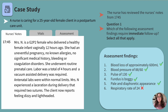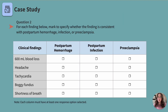Let's move on to question two. This is a chart similar to one you may find on your exam. For each finding listed, you will mark whether the finding is consistent with postpartum hemorrhage, infection, or preeclampsia. Pause, make your selections, then we'll review. Let's go through these one by one. First, 600 mLs of blood loss — that's consistent with postpartum hemorrhage. Headache — if you said preeclampsia, you'd be correct. Preeclampsia causes hypertension, and hypertension can cause headache.